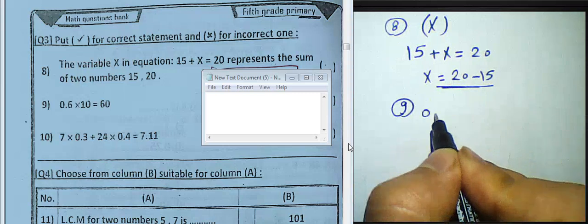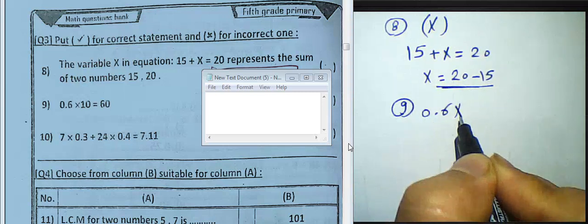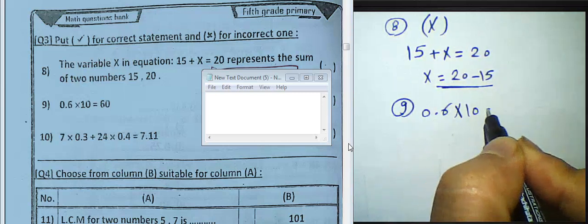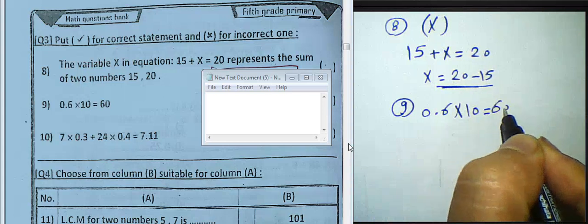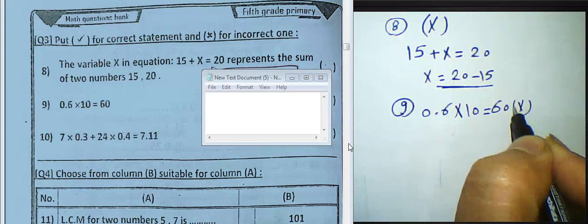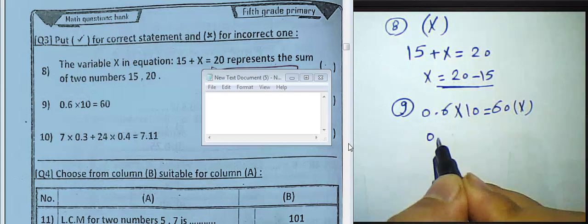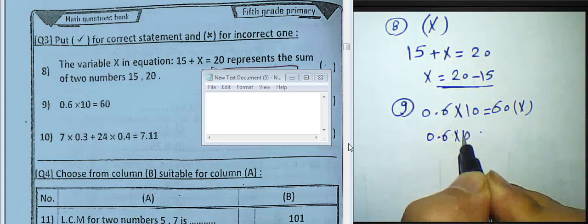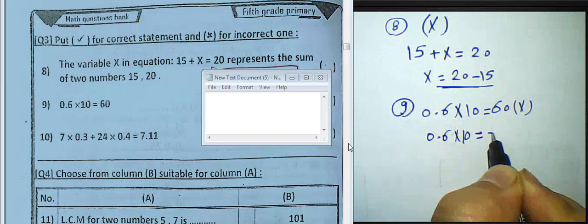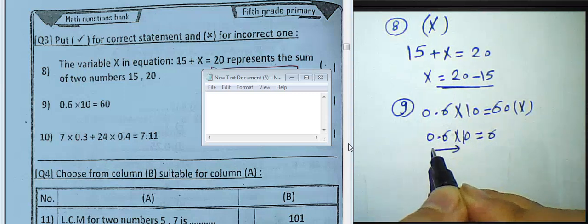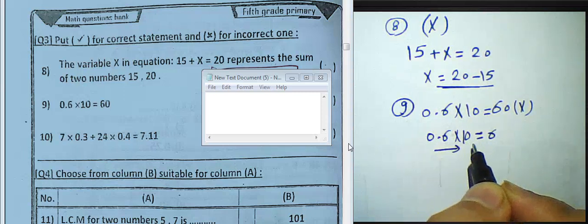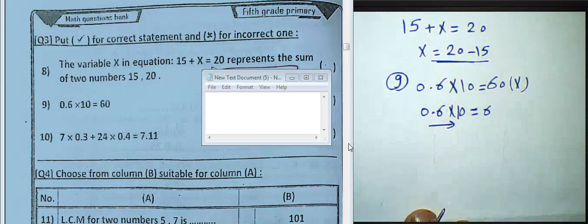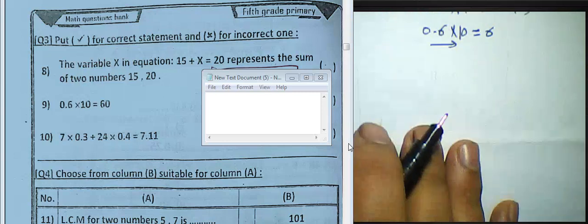Question 9: 0.6 multiplied by 10 equals 6. The statement given says this is false, but the result would indeed be 6 — we move the decimal point one place to the right. So the statement that it is false is itself incorrect.